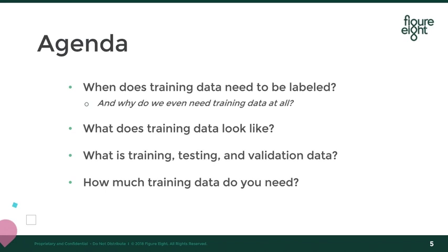Let's move on. I'd like to start by giving the agenda for today's session. I'll start by discussing why training data actually needs to be labeled. Then I'll run through what training data actually looks like — it can be a little hard to understand what labeling means depending on the type of data you're working with. Then we'll discuss the concept of building or training a machine learning model, and discuss training, testing and validation data. Finally, we'll go through how much training data you actually need.